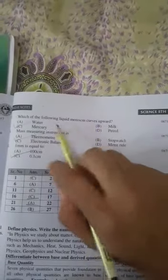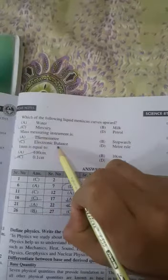Meniscus curve curves upward for mercury. Mass measuring instrument is electronic balance. One millimeter is equal to 0.1 centimeter.